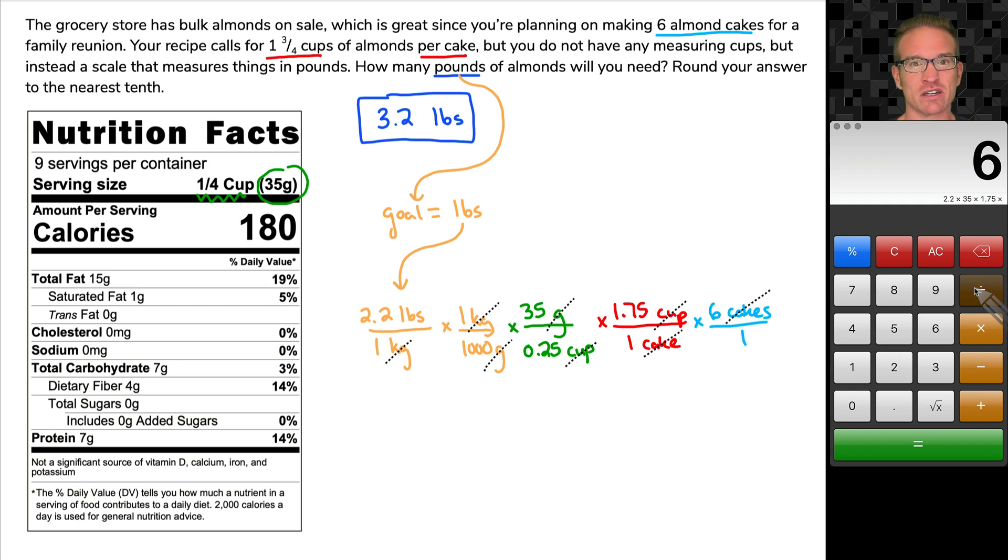I'm going to immediately start dividing by all of my bottom numbers. So divide. I see a 1,000. I'm going to type that in. I'm going to press divide again and I'm going to type in 0.25. And yes, I am dividing multiple times and it just depends on how many numbers we have at the bottom.